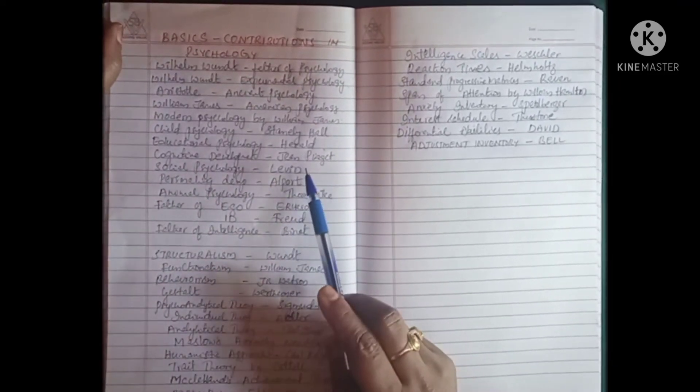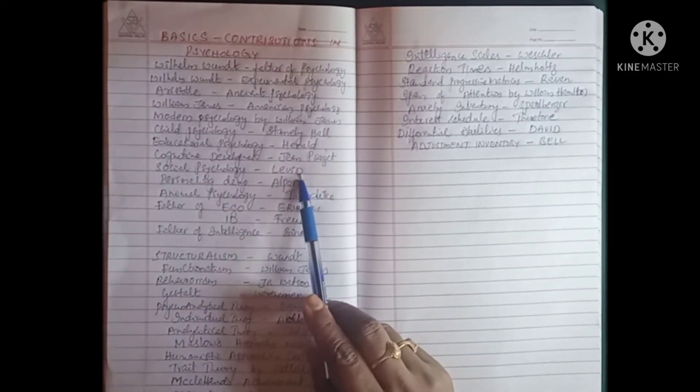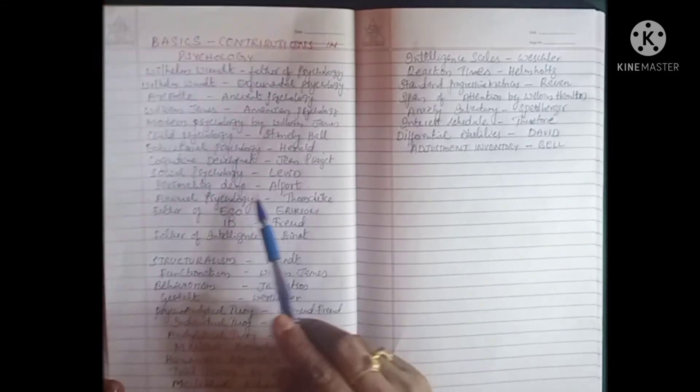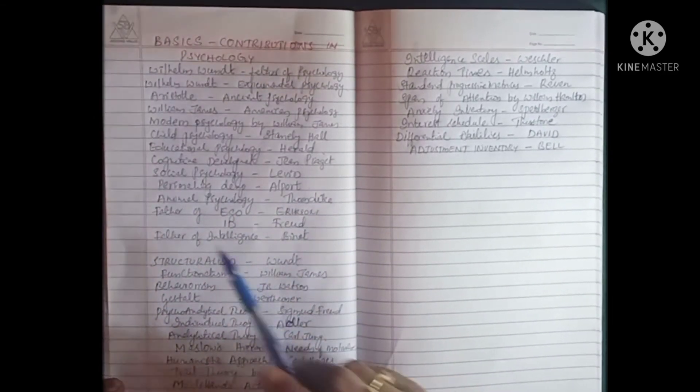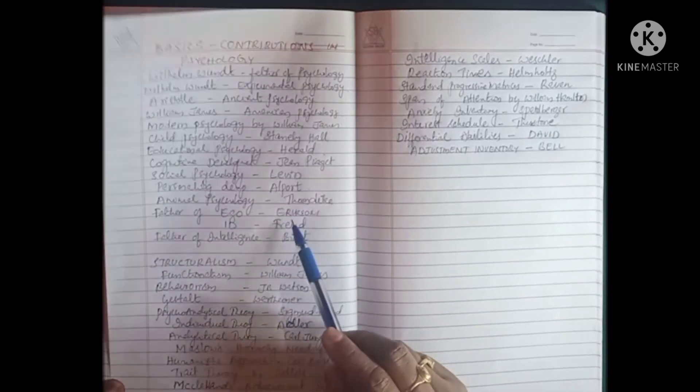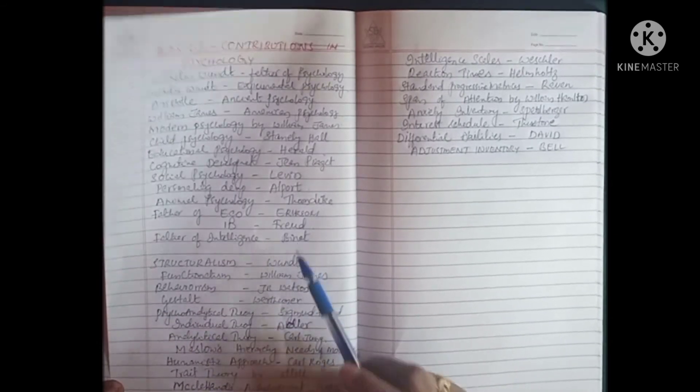Cognitive development given by Jean Piaget. Social psychology by Lewin. Personality development by Allport. Animal psychology by Thorndike. Father of ego - Erikson. Father of id - Freud. Father of intelligence - Binet.